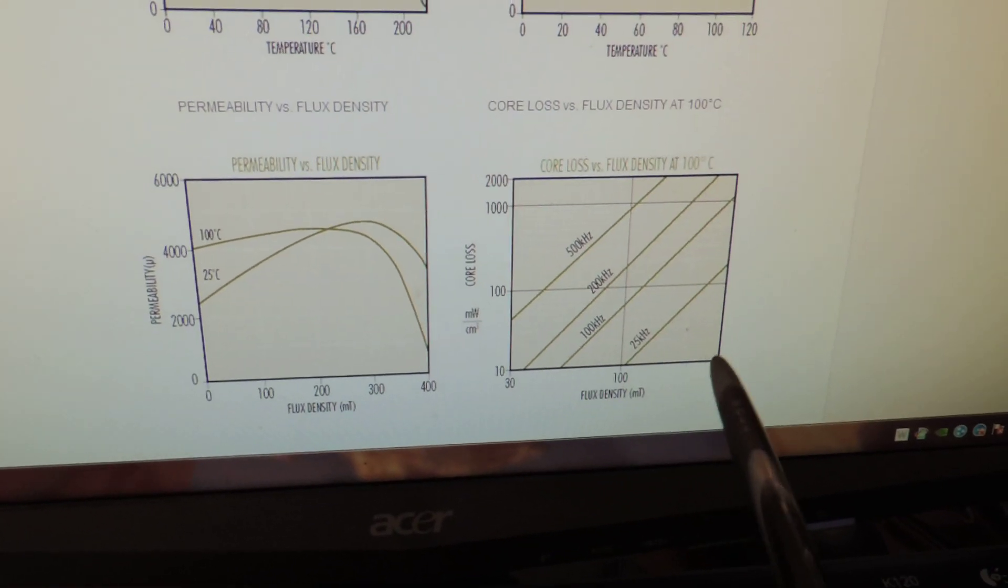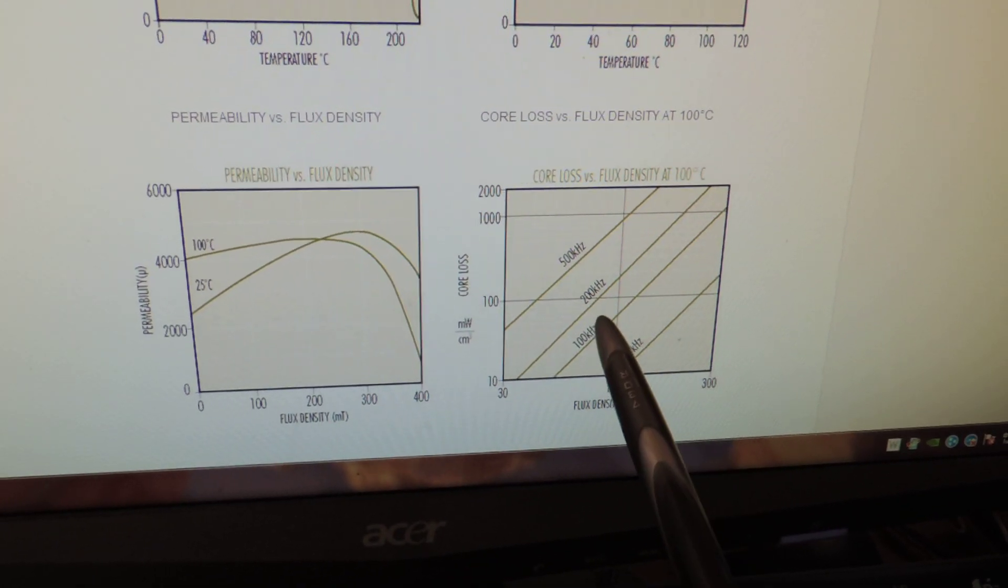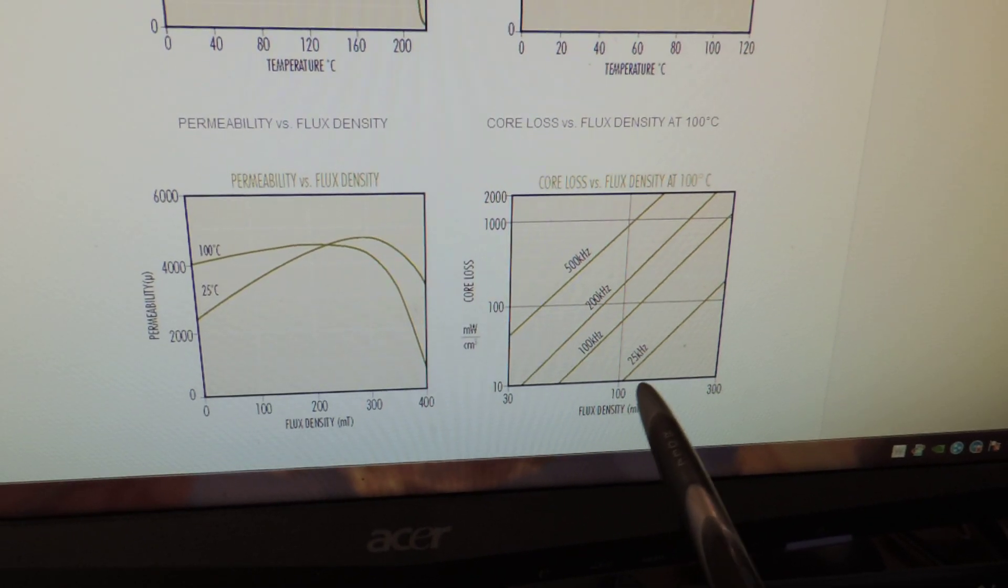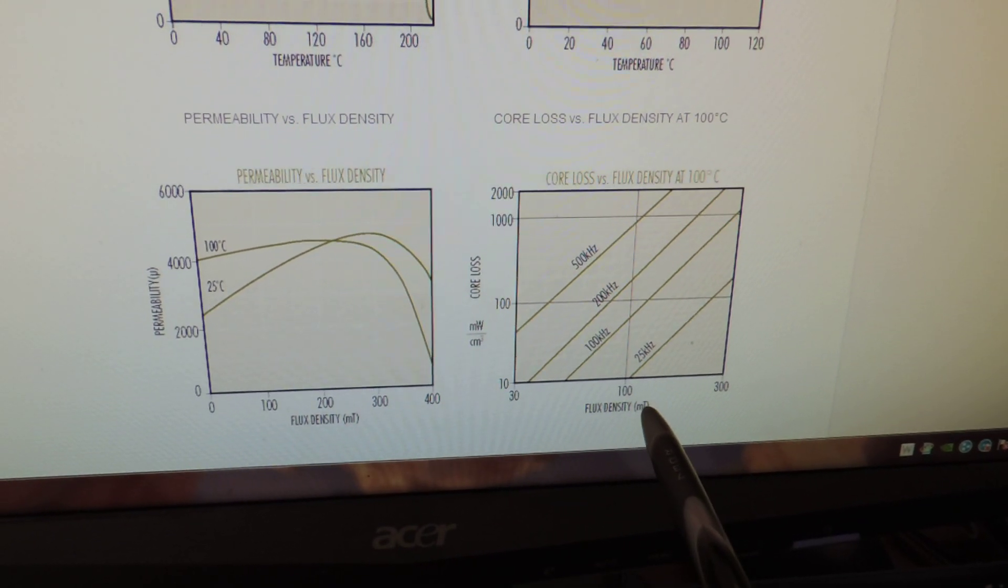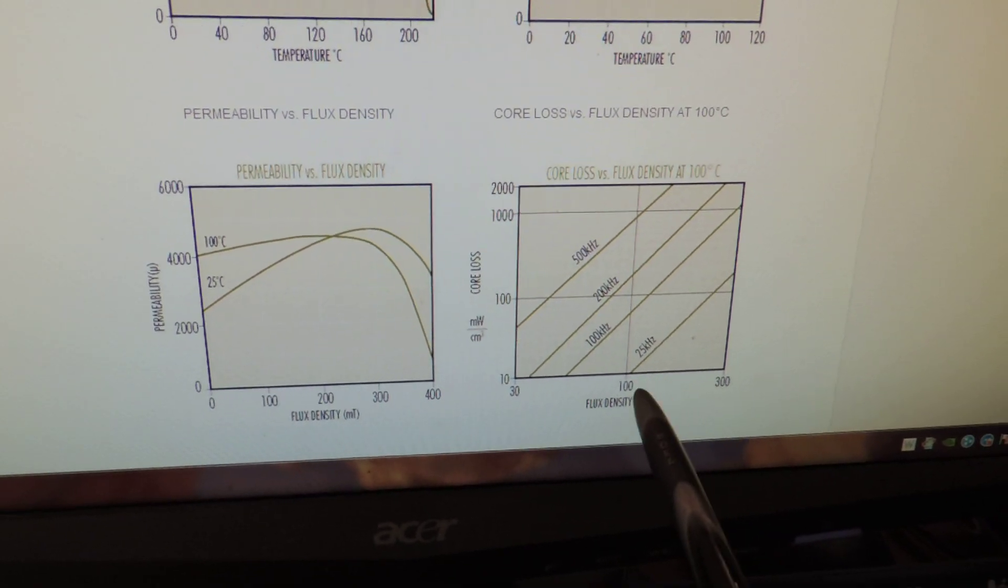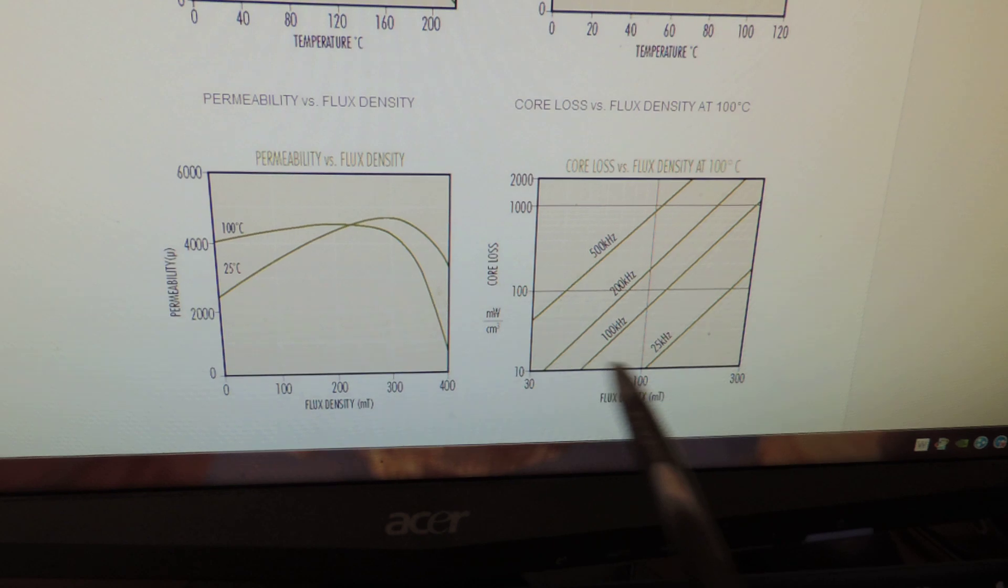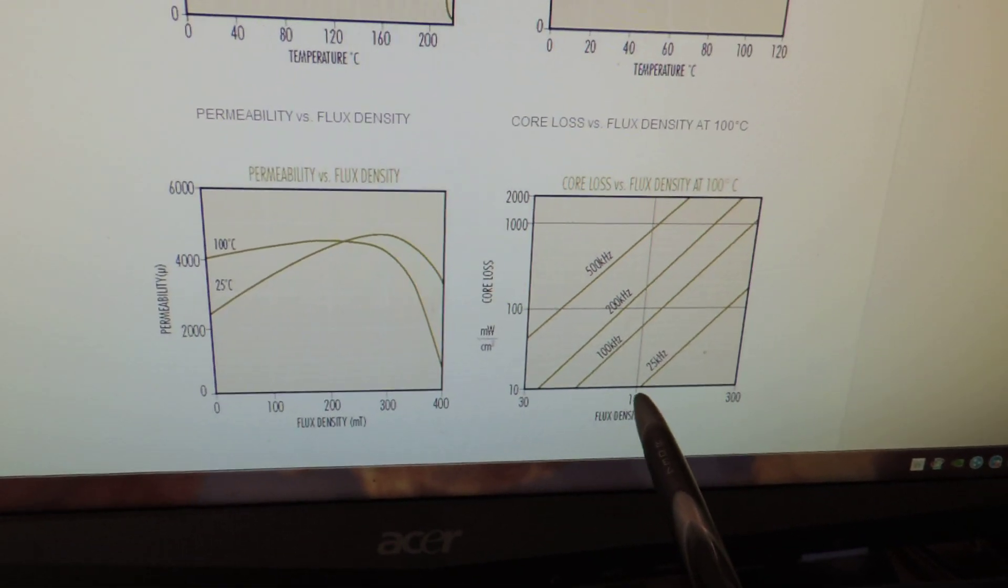A way to make your losses lower is either one, use a lower frequency, two, use a lower flux density. And for a lower flux density, that would either mean using a larger core, or more turns, or both. Those things right there can actually be used to make your core losses lower.